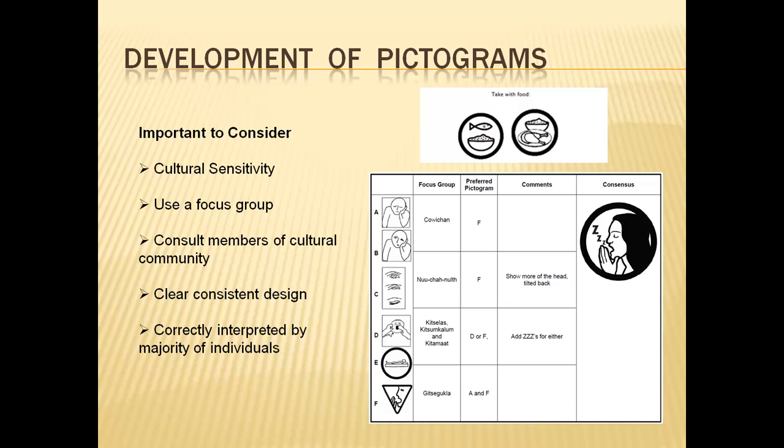In the development of pictograms, it's important to consider cultural sensitivity. It's important to use a focus group and consult members of cultural communities. Be clear and consistent in your design, and pictograms must be correctly interpreted by the majority of individuals. One pictogram can mean one thing in one culture and something different in another. The pictogram showing "take with food" differs between a culture where meals are mainly fish and cereal versus one where the typical diet is chicken and rice. Focus groups targeting the intended user are required. There is also an example here of focus group feedback for a pictogram representing drowsiness.